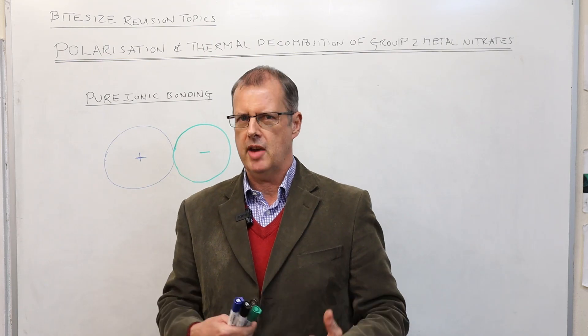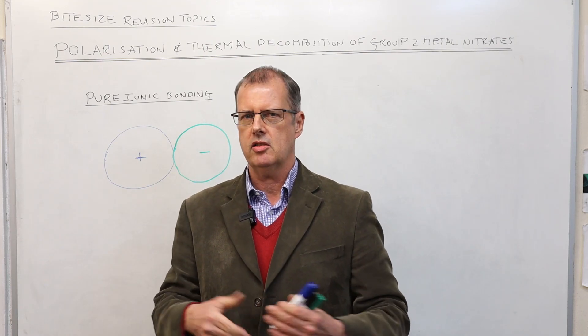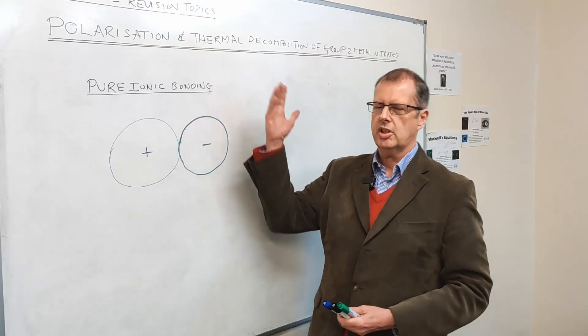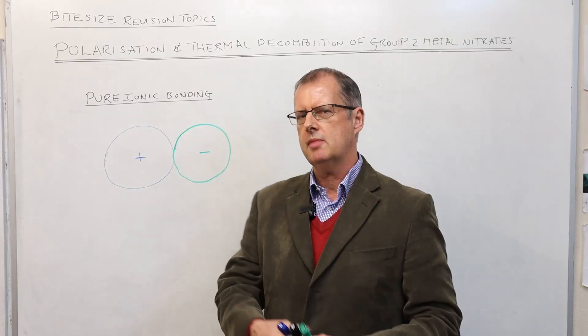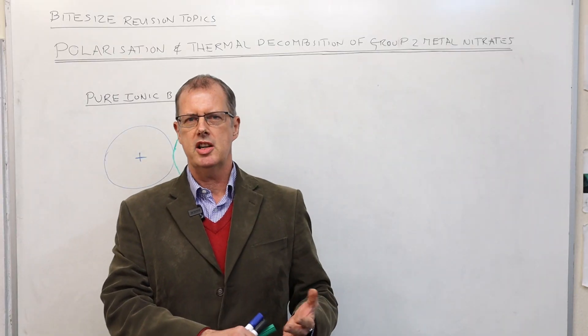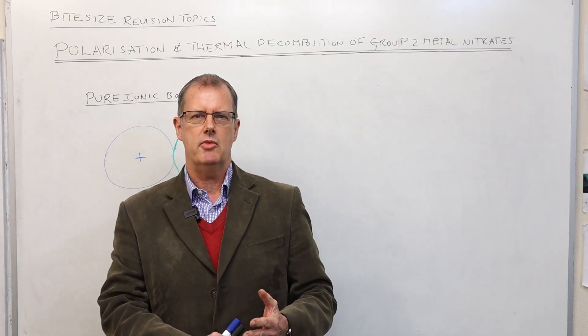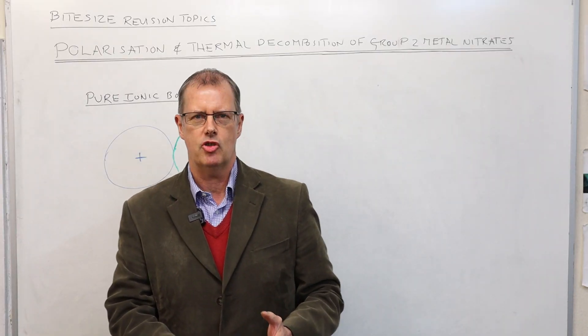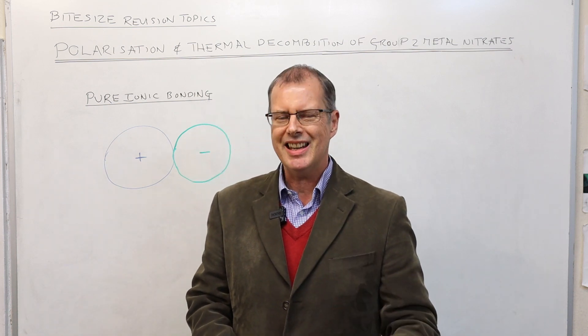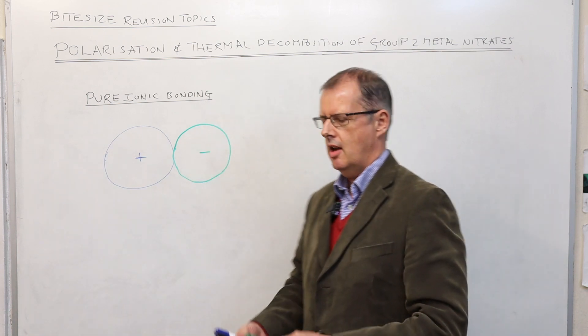There are a lot of terms coming up here, so I need to build the picture up for you. Group 2 nitrates — magnesium nitrate, calcium nitrate, strontium nitrate, etc. These are ionically bonded materials.